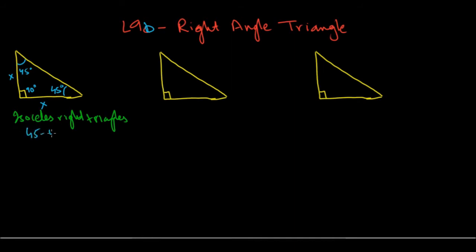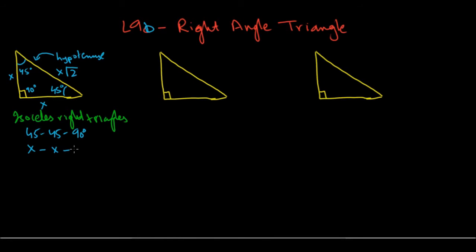So this is known as a 45-45-90 triangle, and your sides can be represented by X, X, and the third side — the longest side, also known as the hypotenuse — that's the side opposite to the 90 degree. The 90 degree is the largest angle in a right triangle, so the hypotenuse is always the longest side. In a 45-45-90 triangle, the hypotenuse is always equal to X√2.